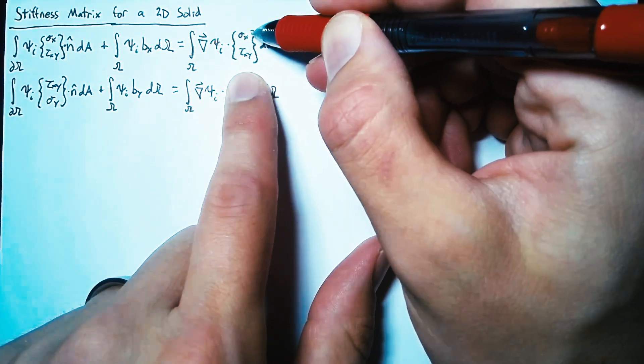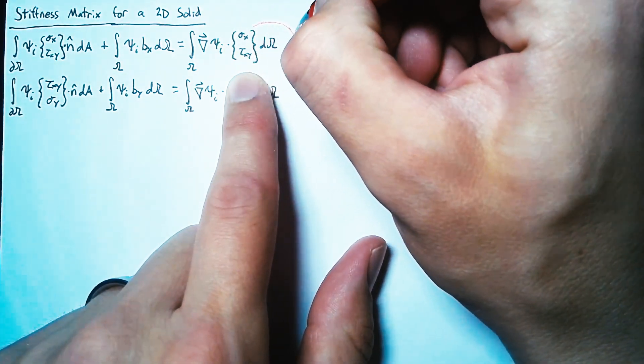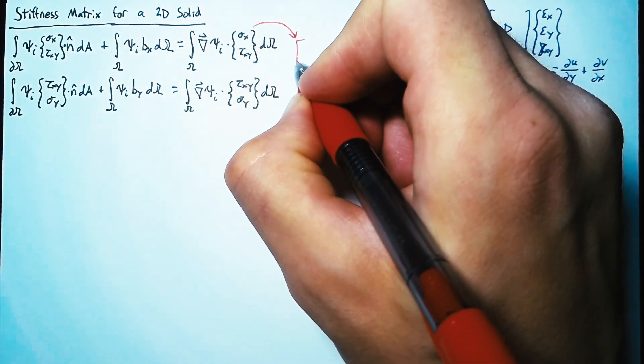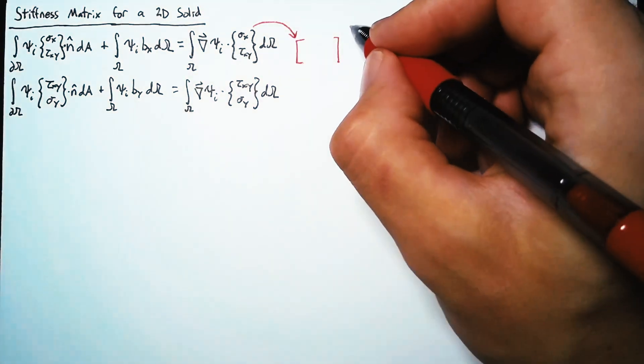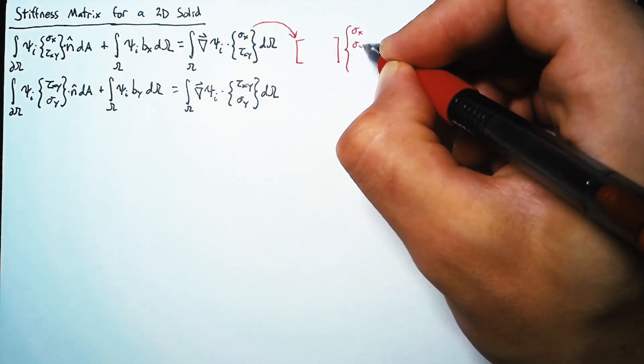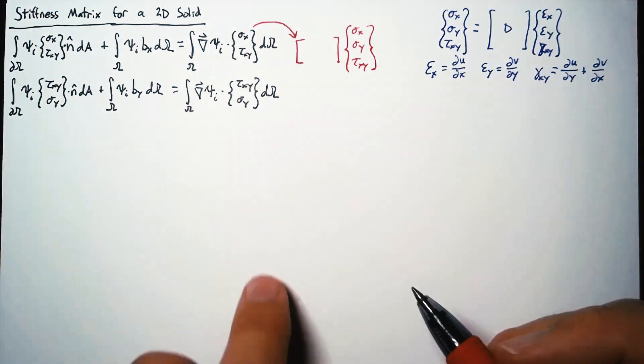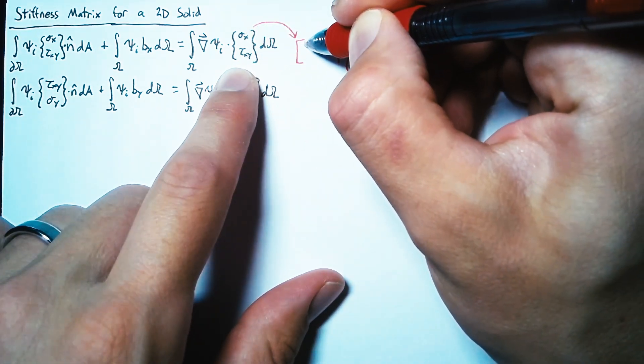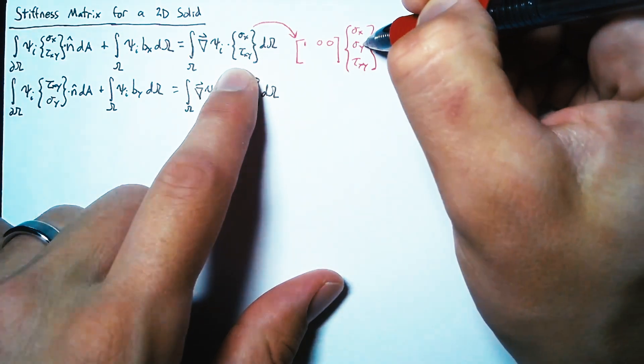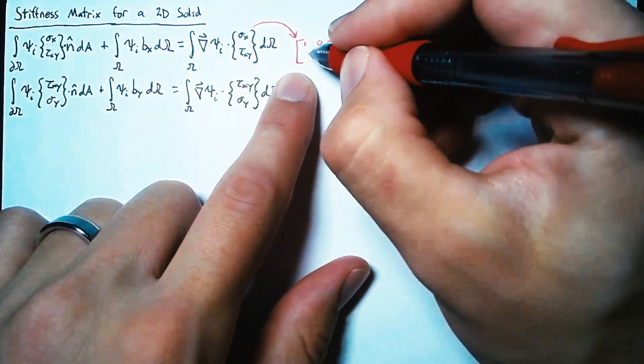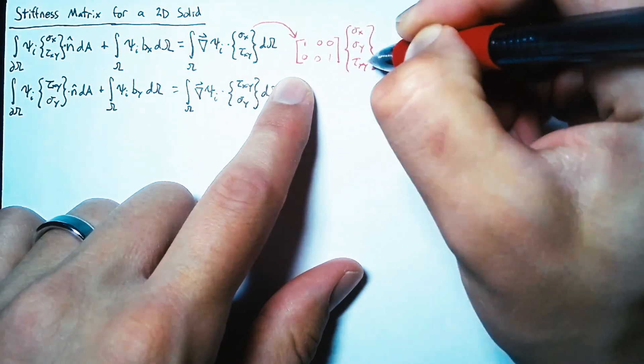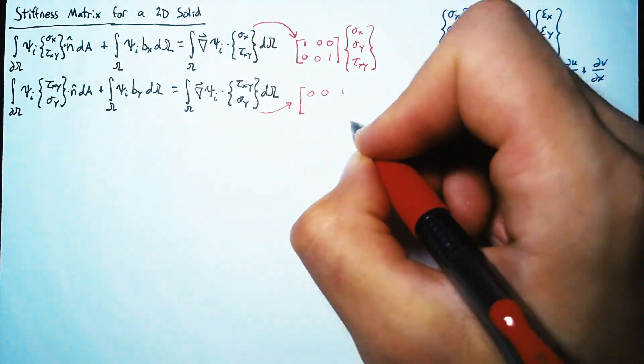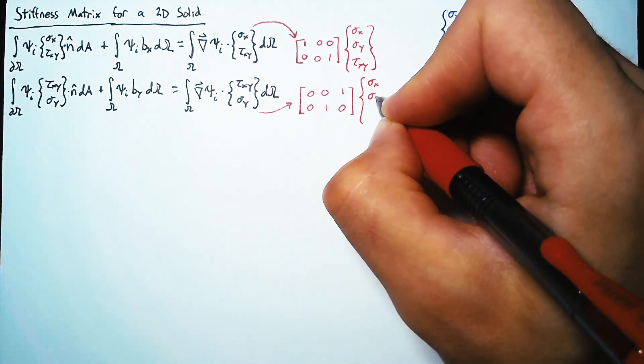To start off, let's expand out this vector a little bit so we can relate it to our full vector. We can do this by adding in an additional matrix that pre-multiplies sigma x, sigma y, and tau xy. So in order to make this multiplication work, we want our first row to be equal to sigma x. That's going to be a 1 in this first location and zeros for the sigma y and tau xy terms. And then the second row is going to be 0, 0, 1, grabbing just the tau xy. And we can do something similar for this equation, with tau xy on top and sigma y on the bottom.